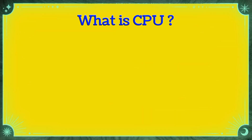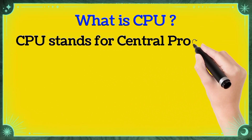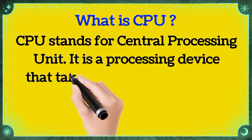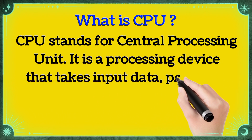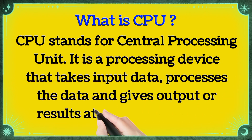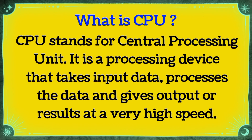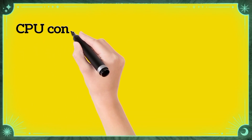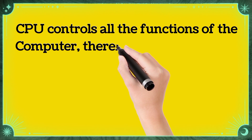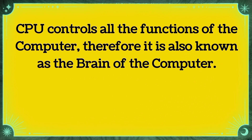What is CPU? CPU stands for Central Processing Unit. It is a processing device that takes input data, processes the data, and gives output or results at a very high speed. CPU controls all the functions of the computer. Therefore, it is also known as the brain of the computer.